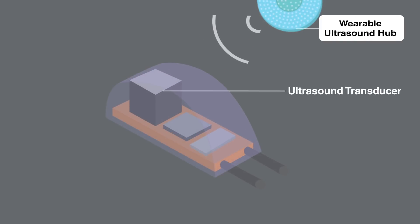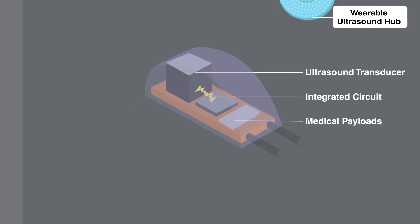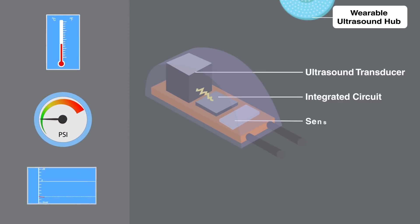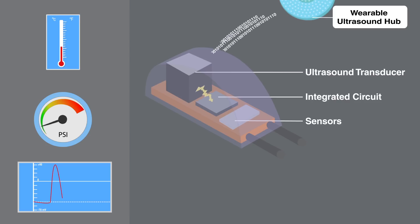The implant consists of an ultrasonic data and power transducer to communicate and convert the ultrasound to electricity, an integrated circuit for control and processing, and a variety of medical payloads.